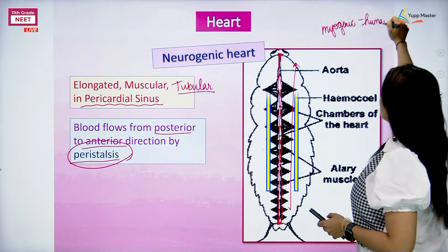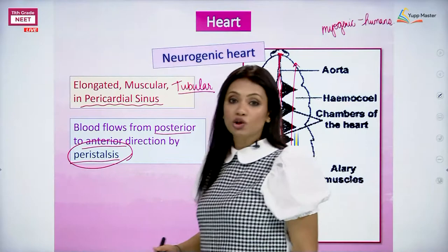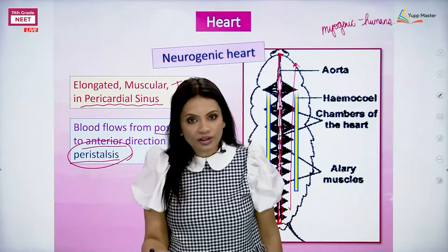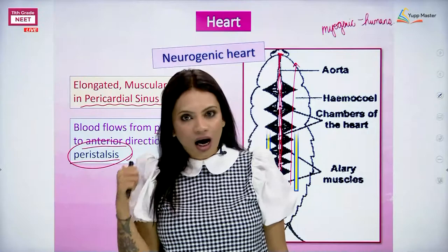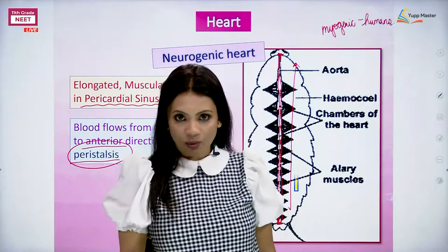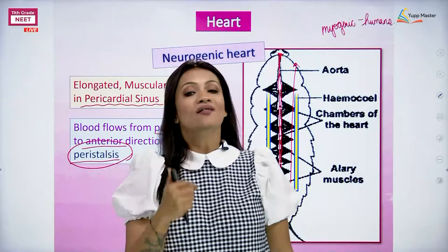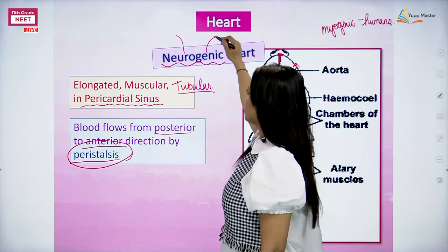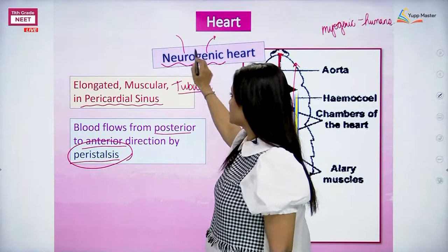Myogenic heart is for humans. But when we talk about the cockroach, its heart is contracting too - but who is making its heart contract? It's the nervous system. It is the neurons, the nervous system, the nerves which extend from the nerve cord and reach all the chambers of the heart, causing it to contract. Because the nervous system is controlling the heart of the cockroach, this kind of heart is called a neurogenic heart.